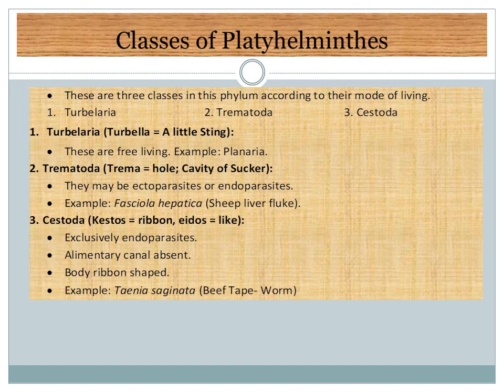Classification of Platyhelminthes — there are three classes: Turbellaria, Trematoda, and Cestoda. The first class is Turbellaria — the word 'turbella' means a little thing. These are free-living and mostly live in fresh water. Their structure is flat, like Planaria. They have no hooks but they have cilia.